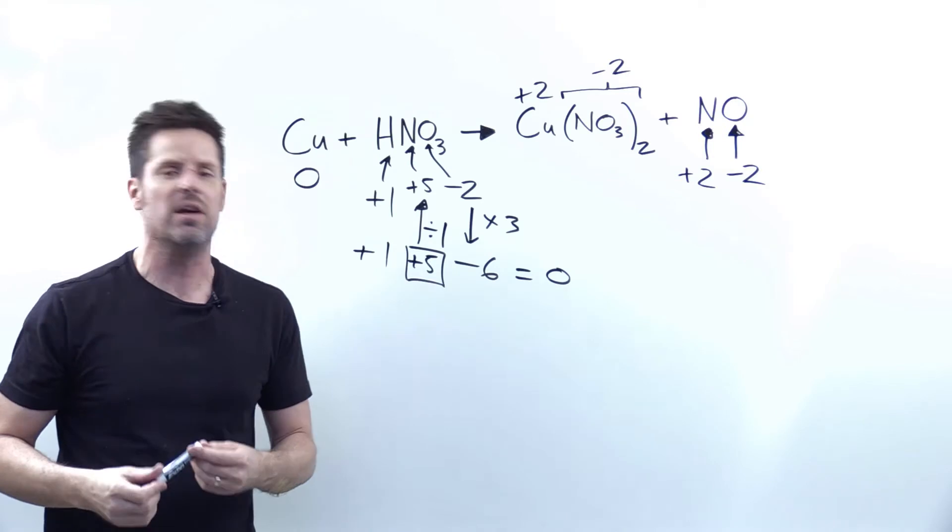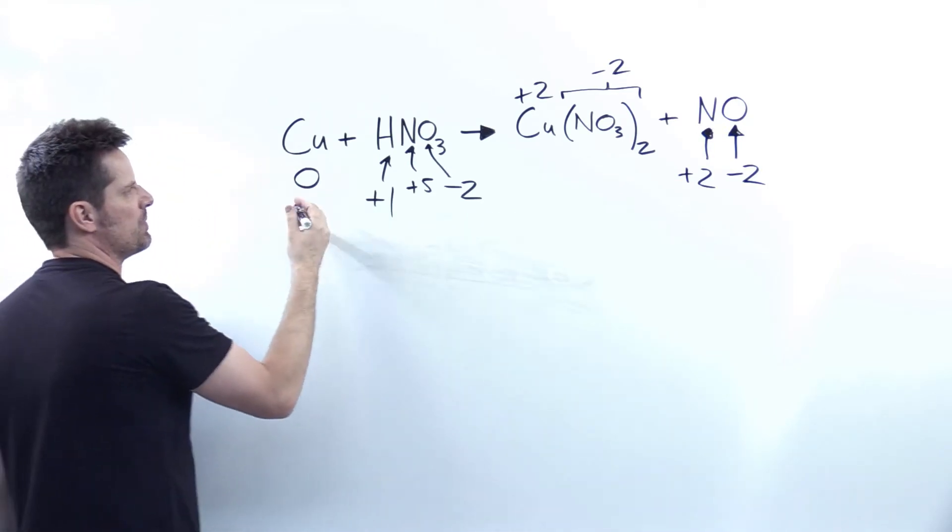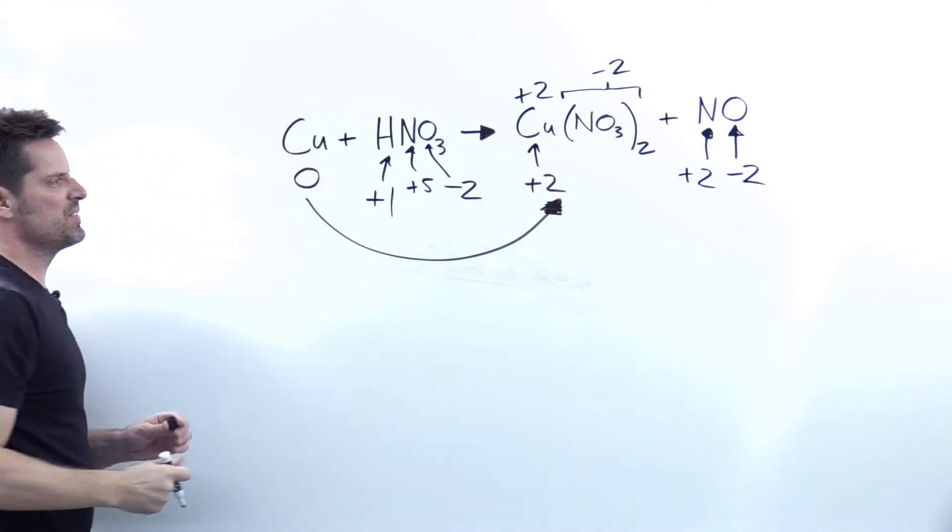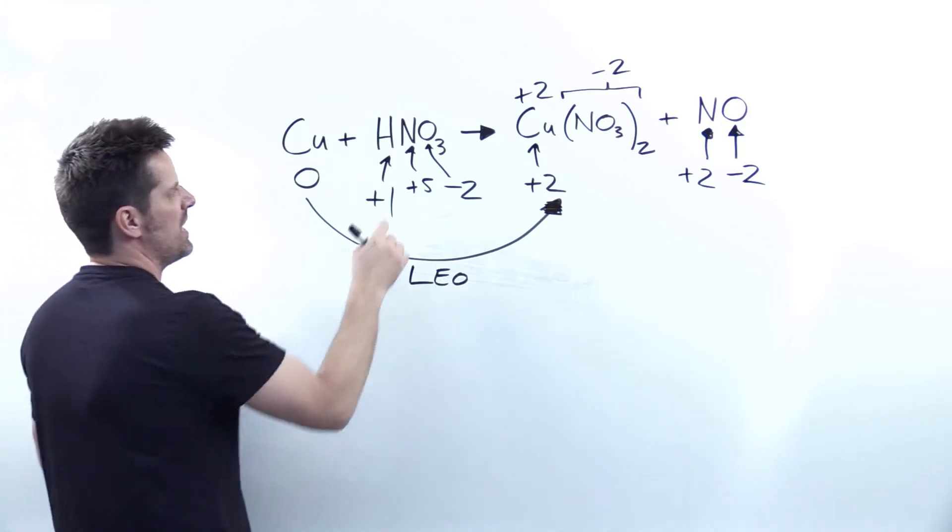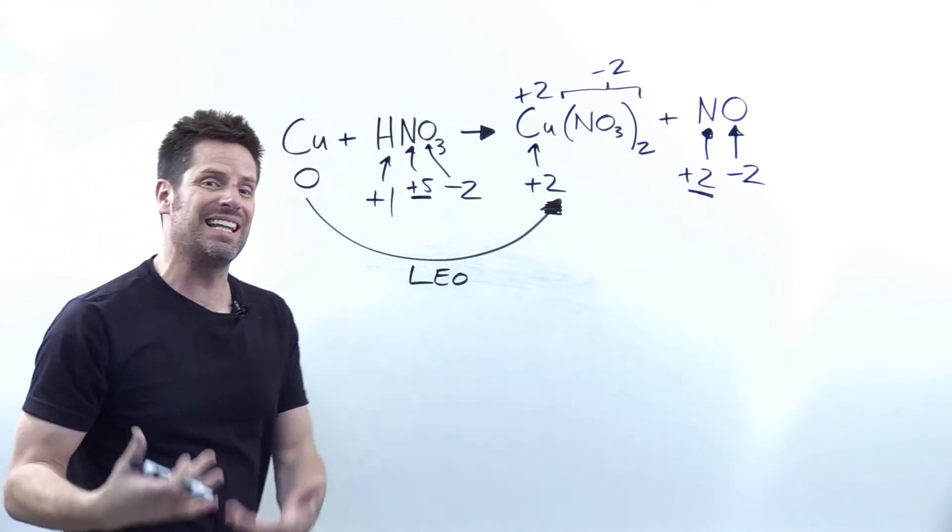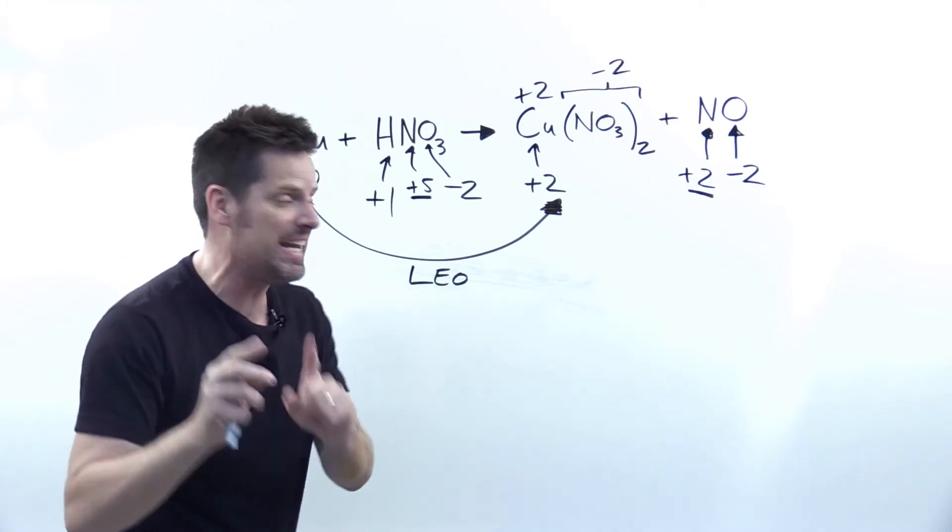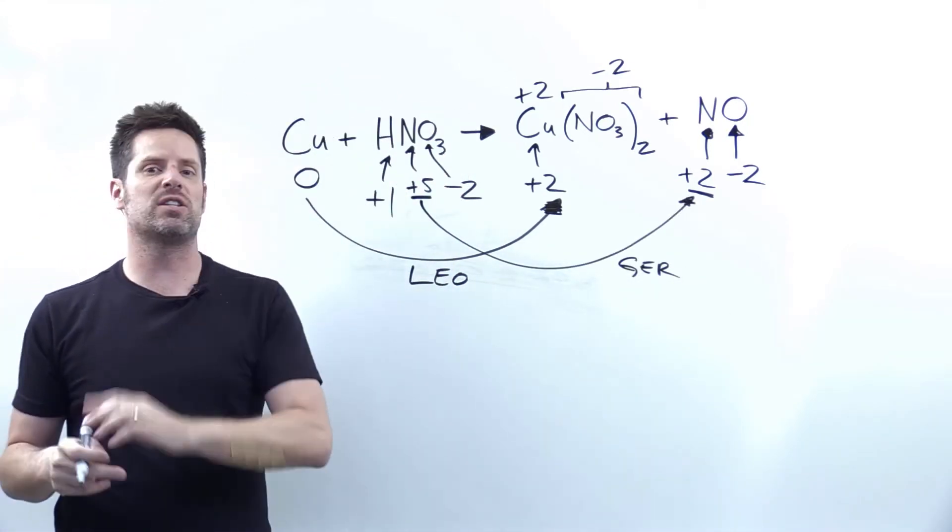Now let's see if we can determine who gets oxidized and who gets reduced in this reaction. In this reaction, my copper goes from zero over here to positive two. That's becoming more positive by losing electrons. So that is my Leo. In contrast, the nitrogen here goes from plus five over here to plus two. That's becoming less positive or more negative by gaining electrons. So that is my Gurr. We've now identified who gets oxidized, who gets reduced.